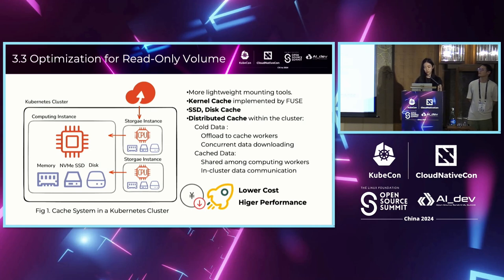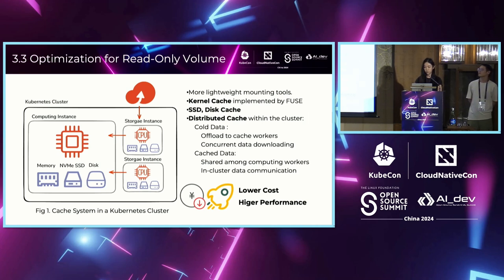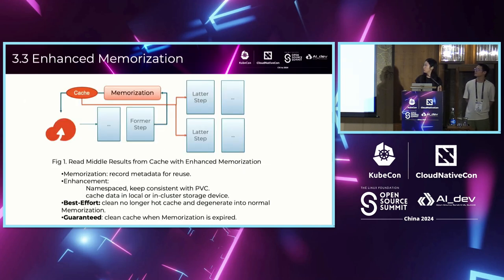Another choice is distributed cache. Cheaper nodes with large memory and high network I/O limits can be added to the cluster, and files can be divided and stored across different nodes. This can be easily implemented by a distributed orchestration platform like Fluid. For cold data, it can be prefetched concurrently and can reach the I/O limits of the single backing store. For hot data, it can be reused by multiple nodes — when they need to pull data, only in-cluster communication is required. We can also use the data cache to enhance memoization mechanisms in our workflow.